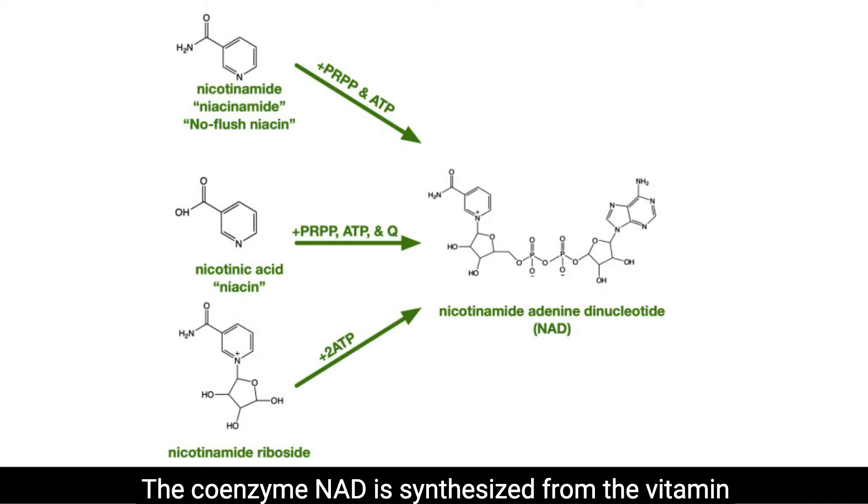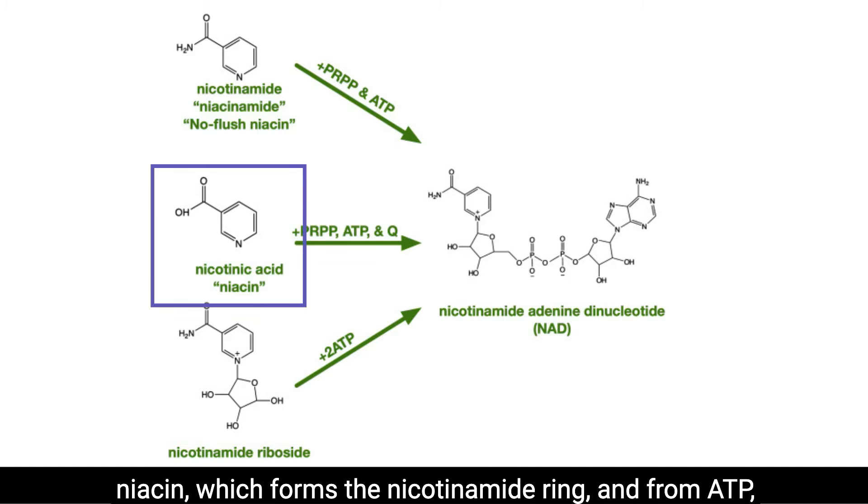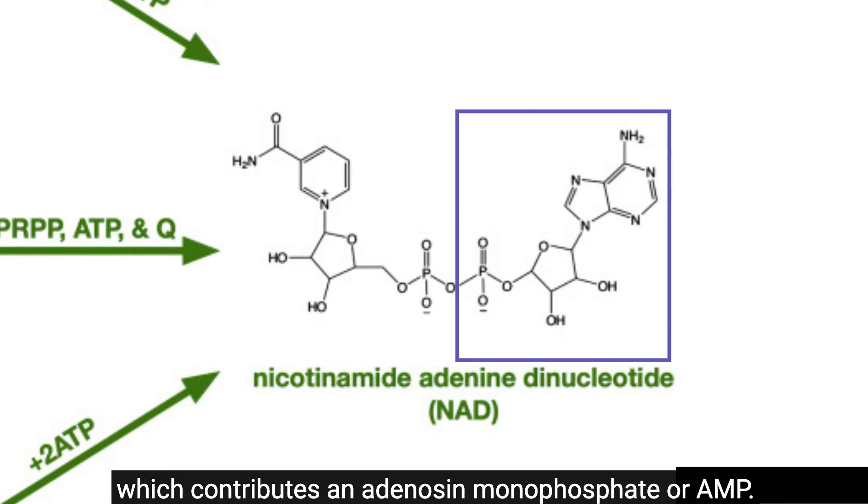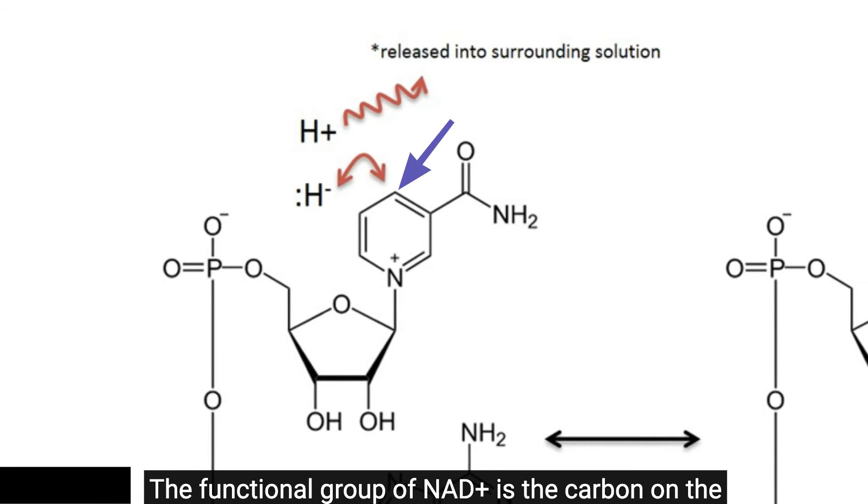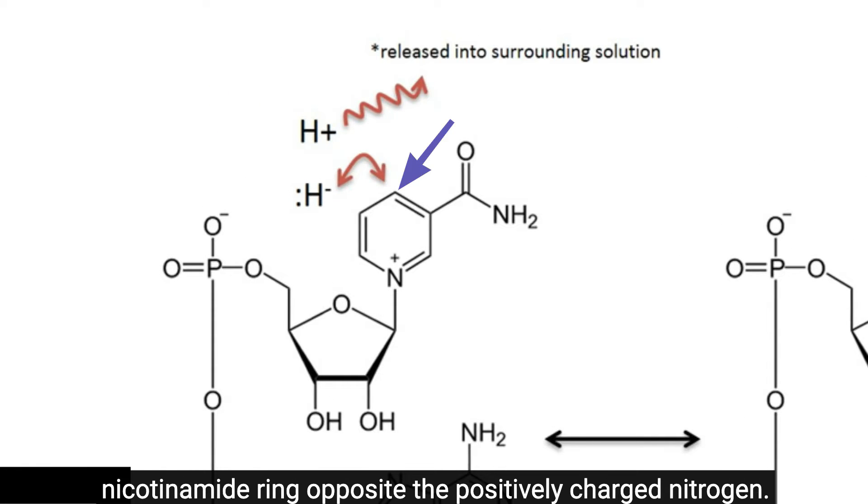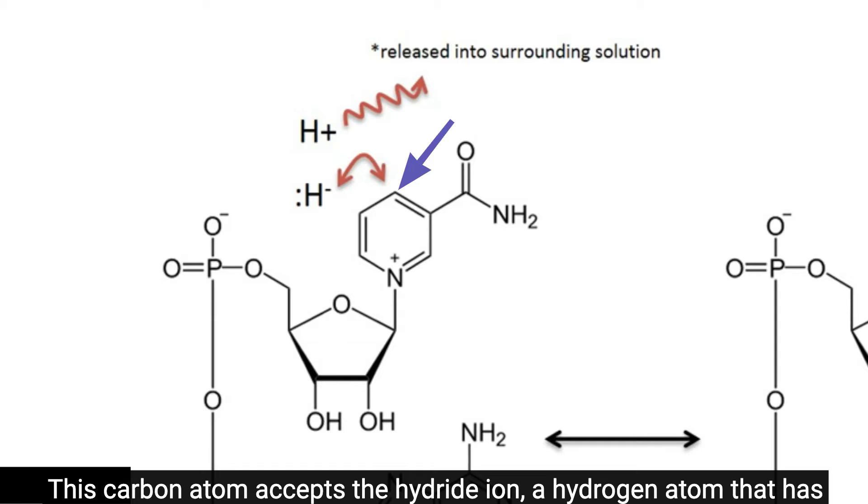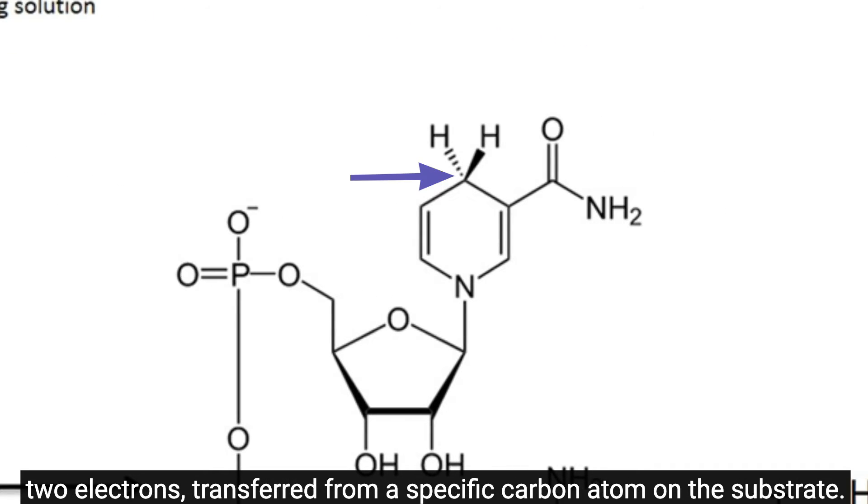The coenzyme NAD is synthesized from the vitamin niacin, which forms the nicotinamide ring, and from ATP, which contributes an adenosine monophosphate or AMP. The functional group of NAD+ is the carbon on the nicotinamide ring opposite the positively charged nitrogen. This carbon atom accepts the hydride ion, a hydrogen atom that has two electrons, transferred from a specific carbon atom on the substrate.